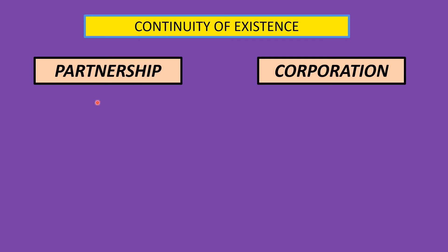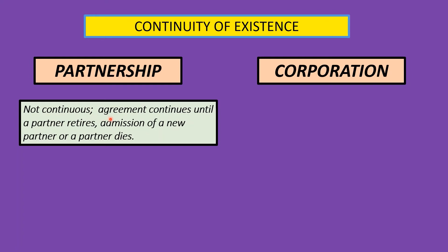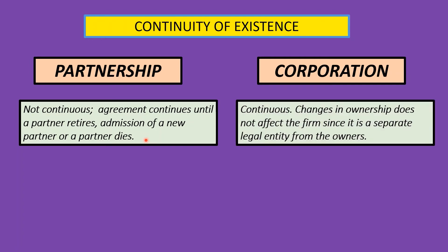Regarding continuity of existence: a partnership is not continuous — the agreement continues until a partner retires, a new partner is admitted, or a partner dies. As soon as any of these things take place, the partnership ceases to exist. A corporation, however, is continuous — changes in ownership do not affect the firm since it is a separate legal entity from its owners. The corporation continues to exist and will do so until it is wound up.